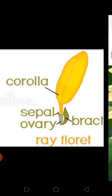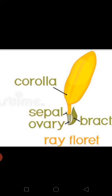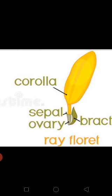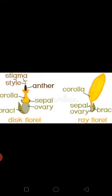The ray florets in the head inflorescence are found in the peripheral region and are rare, very small flowers. They are female (unisexual) flowers, having only an ovary, style, and stigma. To summarize: disc florets are bisexual and actinomorphic, while ray florets are unisexual and female.